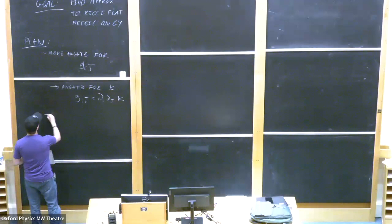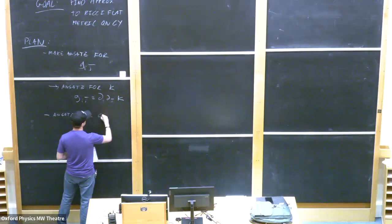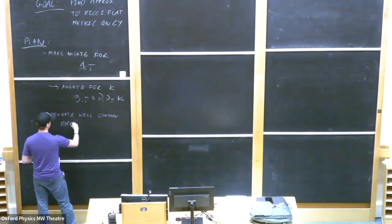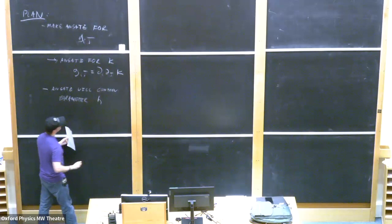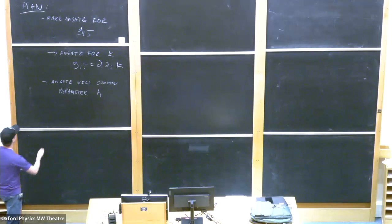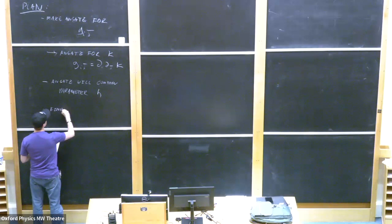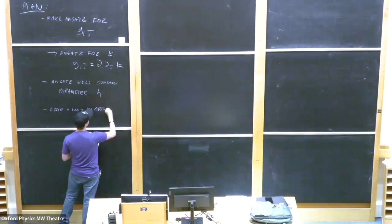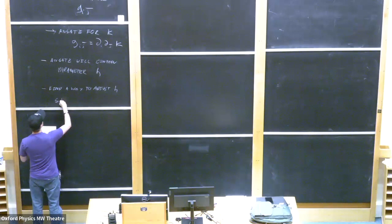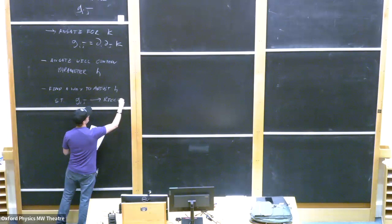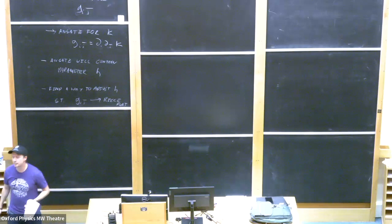We're going to make an ansatz for the Kähler potential. From that we get the metric. This ansatz will contain parameters, which are going to be called H — H for parameters. Just some toggles we can tune. We're going to find a way to adjust the parameters, adjust H, such that g_{i\bar{j}} becomes the Ricci-flat object. Of course, we'll never get something perfectly Ricci-flat because we're doing numerics, but we'll get as close as we can.